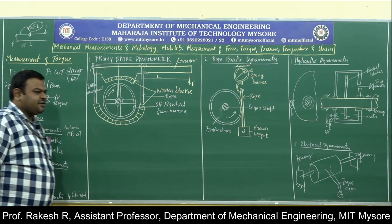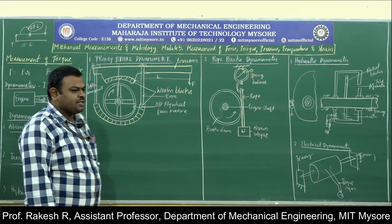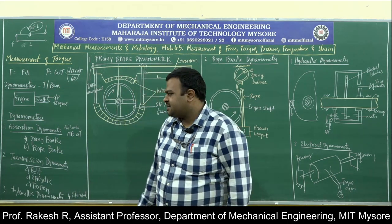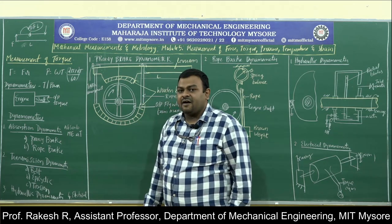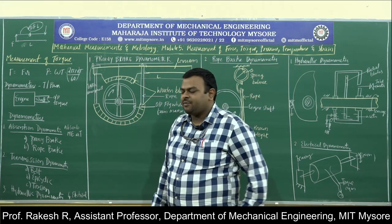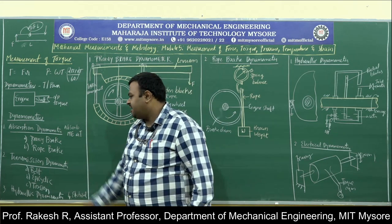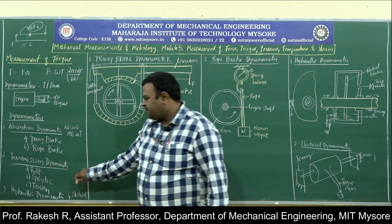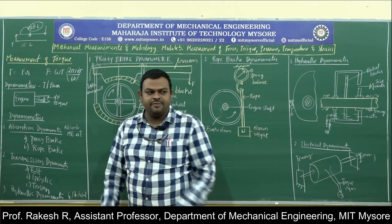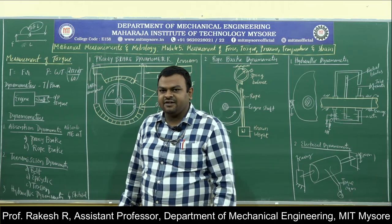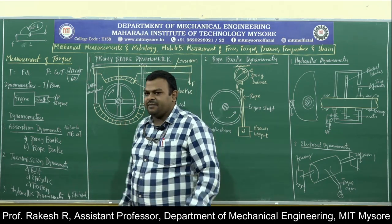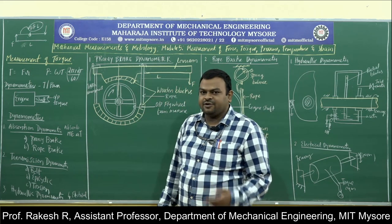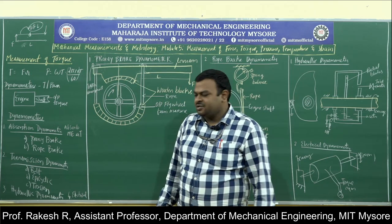Dynamometers are classified into two groups: absorption dynamometers, which absorb mechanical energy, and transmission dynamometers, which transmit mechanical energy in the form of power. A transmission dynamometer can be a belt drive, gear drive, or simply a torsion meter.